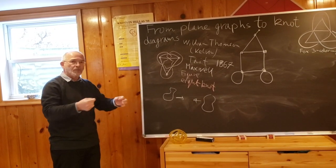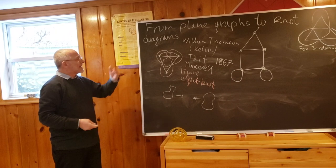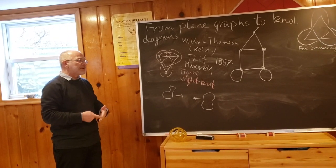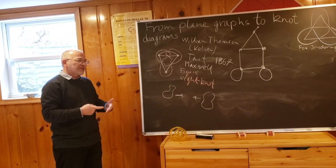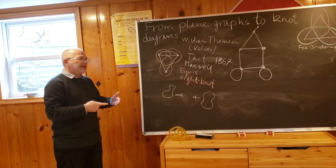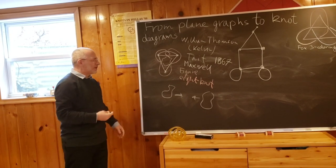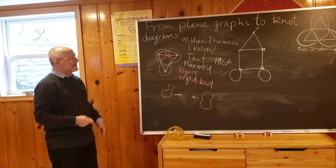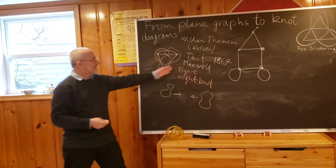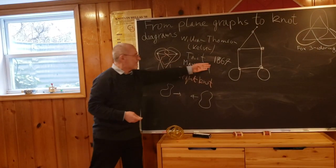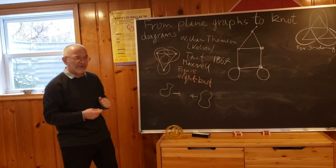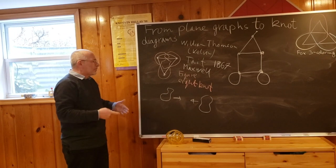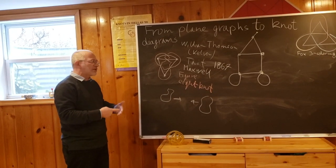This gave Kelvin, then Thomson, a great idea that maybe atoms are knots in ether. In such a way, the vortex theory of atoms was created by Kelvin. His first paper was already published the same year. This story didn't survive for long, but it gave big impetus to study knots.